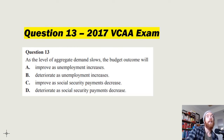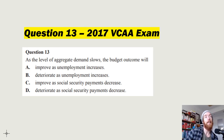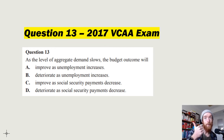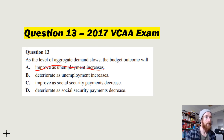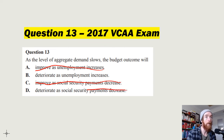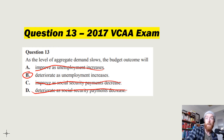Question 13 from the 2017 VCAA exam: 'As the level of aggregate demand slows, the budget outcome will...' When aggregate demand slows, unemployment rises, tax revenues fall, and welfare outlays increase. It won't improve, so we rule out 'improve as unemployment increases.' Between 'deteriorate as unemployment increases' and 'deteriorate as social security payments decrease' — social security payments would actually increase, not decrease. Answer: deteriorate as unemployment increases.